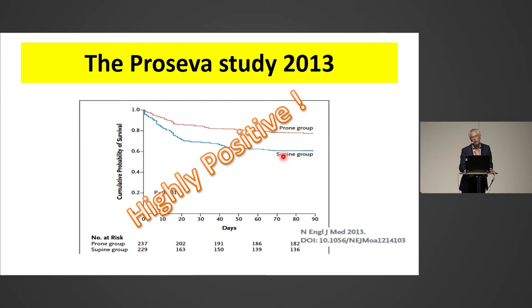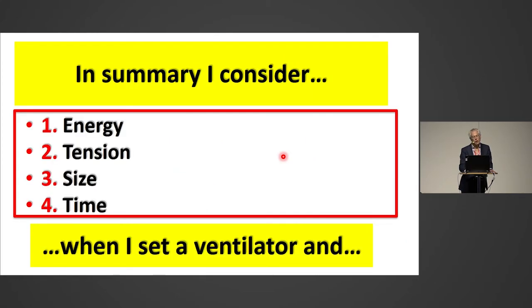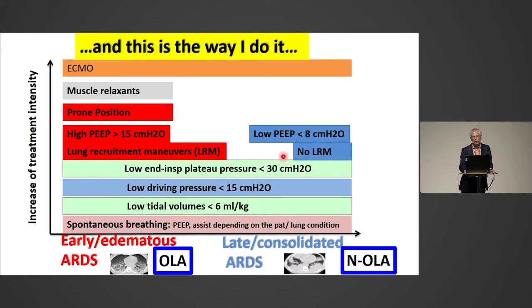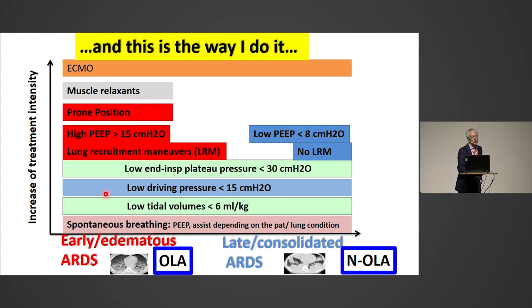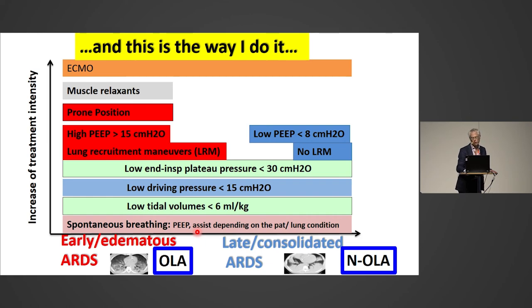In summary, when I ventilate I consider energy, tension, size, and time when I set the ventilator. In the early exudative phase of ARDS, the open lung approach may be advantageous — lung recruitment, high PEEP, prone positioning. But if you are a little bit later, after some days, you should not recruit. Use lower PEEP and don't recruit the lung. But in all cases, use low tidal volume, low driving pressure, and low inspiratory pressure to reduce tension and energy transfer to the lung. And of course, if nothing works, ECMO is there. Spontaneous breathing I will not discuss, but if done carefully and smartly, I think it can be used more often than we do today. Thank you.